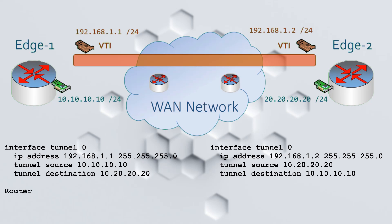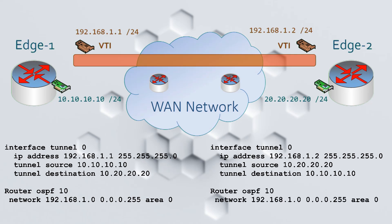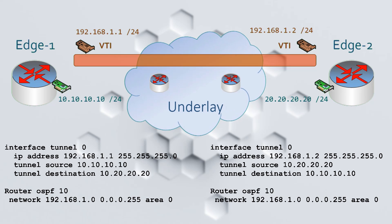When traffic arrives at the router, it is passed across the tunnel. The core network is transparent to this traffic. If you ran a traceroute, each of these edge routers would appear, but the routers in the middle will not. The network that we're tunneling across is called the underlay network. The tunnel is built on top of the underlay, and therefore is called the overlay network.